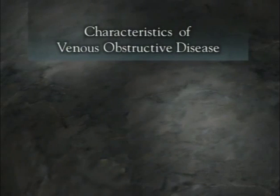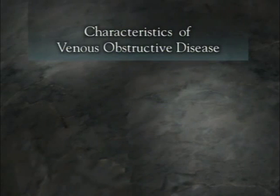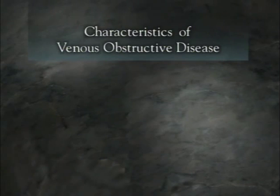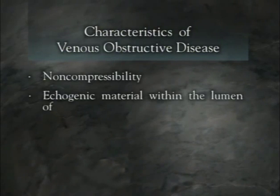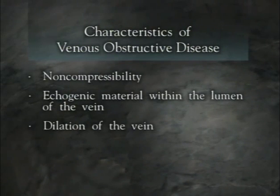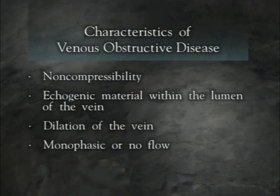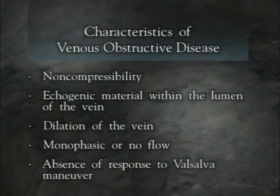If flow in the inferior vena cava is obstructed, the examiner should note the characteristic features of venous obstructive disease. These are: non-compressibility, echogenic material within the lumen of the vein, dilation of the vein, monophasic or no-flow, and absence of response to Valsalva maneuver.